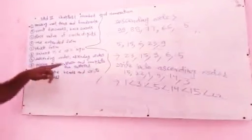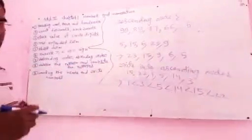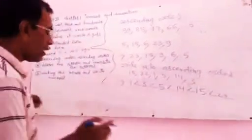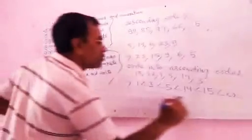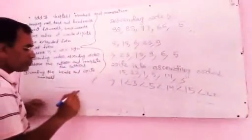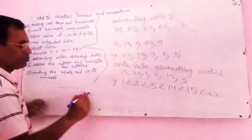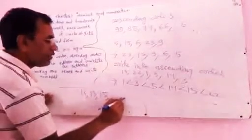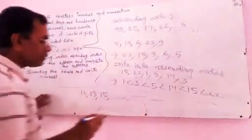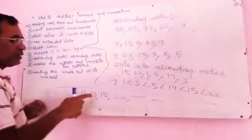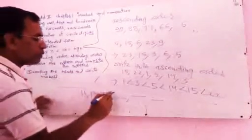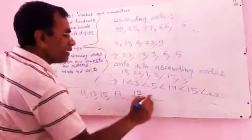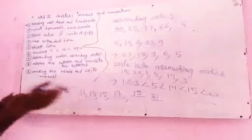Now, observe the pattern and complete it. You are given many numbers and you have to write the next number. For example, given 11, 13, 15 — fill in the blanks. The pattern is adding 2 each time: 11 plus 2 is 13, 13 plus 2 is 15, 15 plus 2 is 17, 17 plus 2 is 19, 19 plus 2 is 21. This is the pattern.